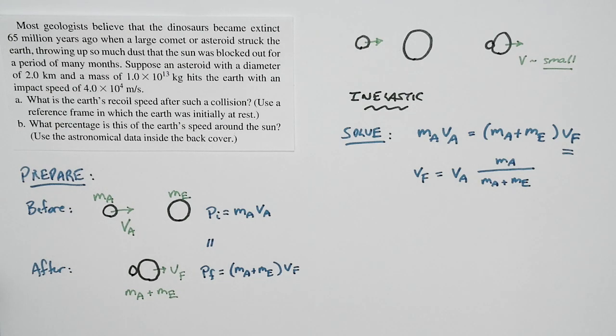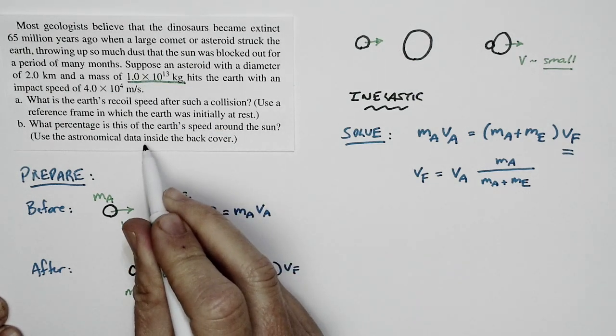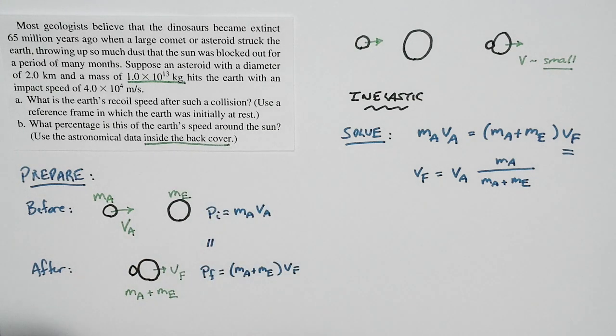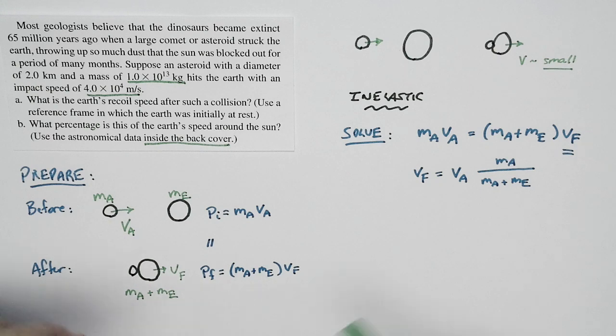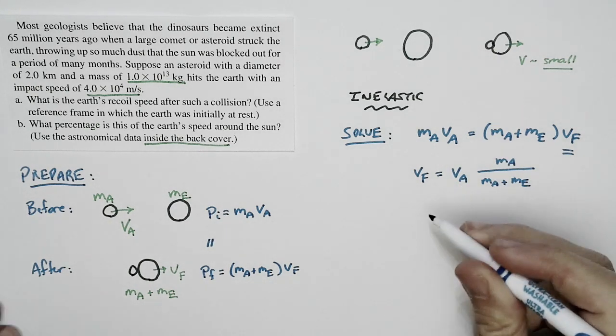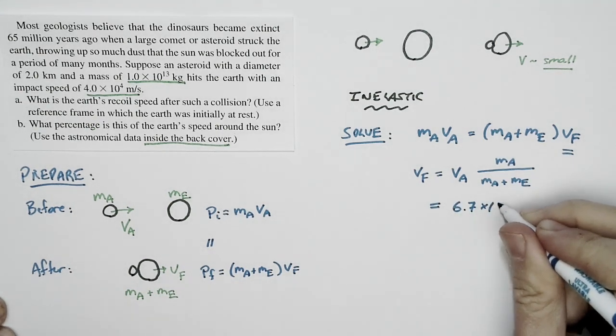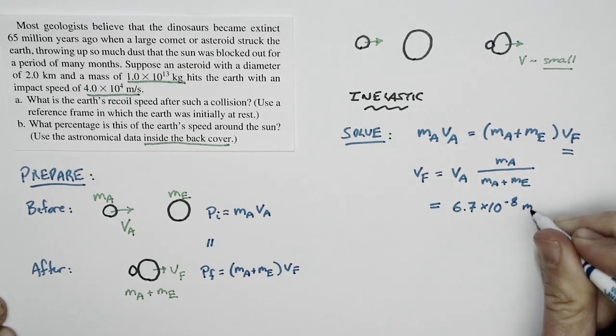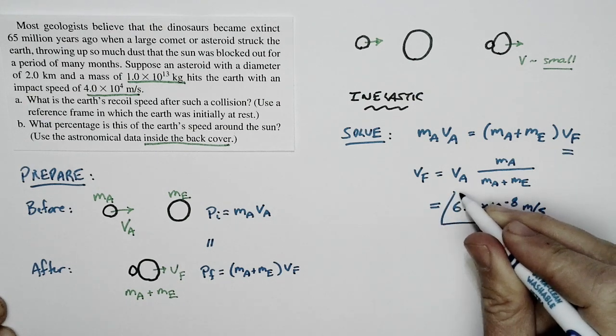Now, the numbers are known because we're given the mass of the asteroid in the problem statement. The mass of the Earth is given inside the back cover of the textbook. We know as well the initial speed of the asteroid. So we know everything on this side of the equation. I can put in numbers. And if I do that, I can calculate a final speed. And the final speed that I get is 6.7 times 10 to the negative 8th meters per second. And that is a tiny speed indeed. It's a very small speed.